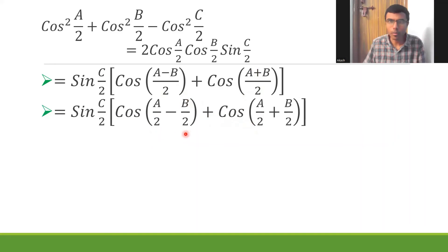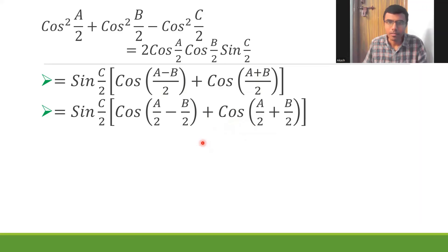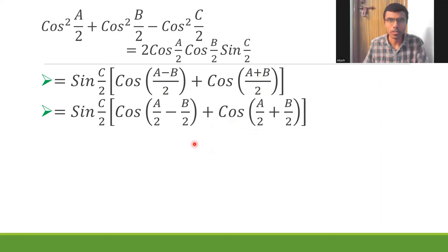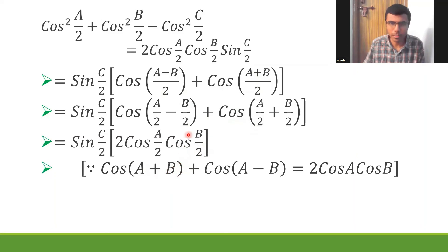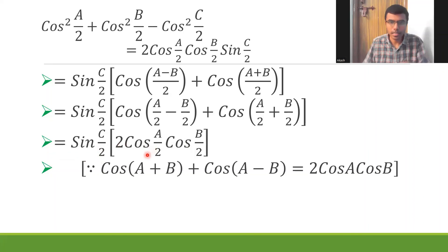This is of the form cos(a - b) + cos(a + b), which equals 2·cos(a)·cos(b). In place of a and b there's a/2 and b/2, so this gives 2·cos(a/2)·cos(b/2). Bringing the sin(c/2) factor and rearranging, that's the final result.